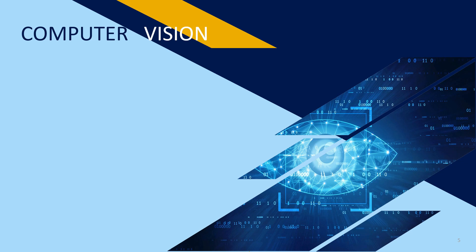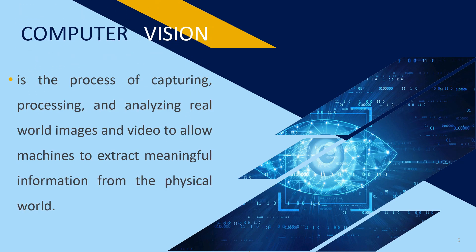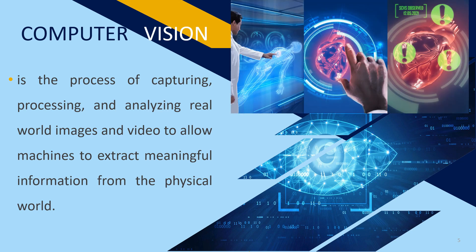The third domain is Computer Vision. Do you think machines can see? Yes, they can with the help of Artificial Intelligence. AI enables machines to see images, process them, and analyze them based on certain algorithms. We can define Computer Vision as the process of capturing, processing, and analyzing real-world images and video to allow machines to extract meaningful information from the physical world. One of the most prominent application fields is Medical Computer Vision, where information from image data is used to diagnose the patient.